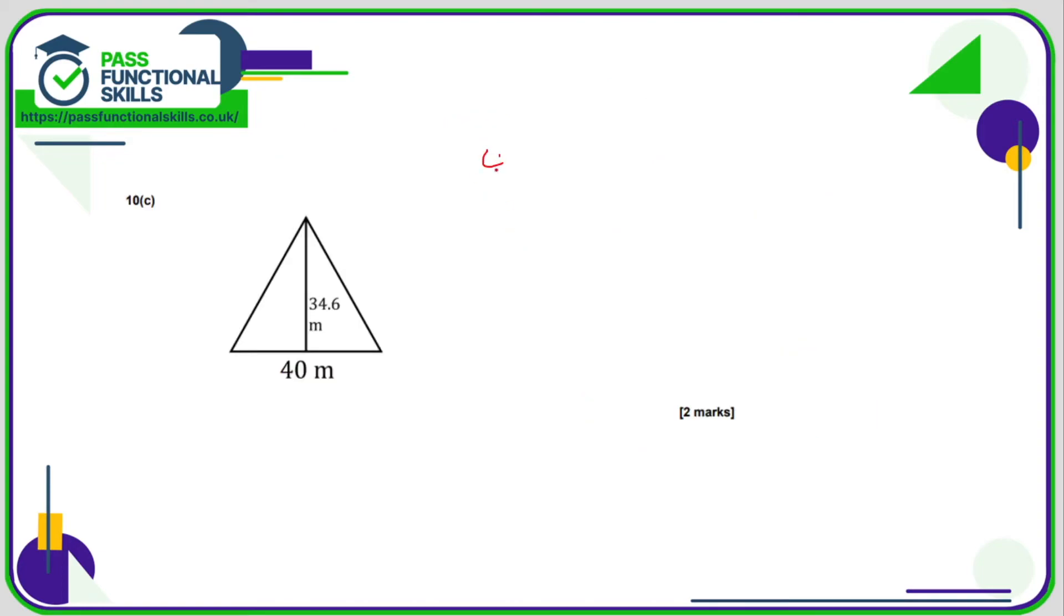10c is going to be 40 multiplied by 34.6 divided by 2. And that comes to a total of 692 meters squared.